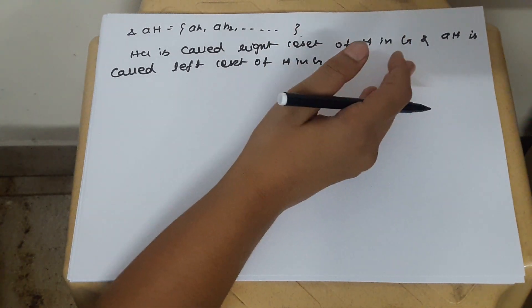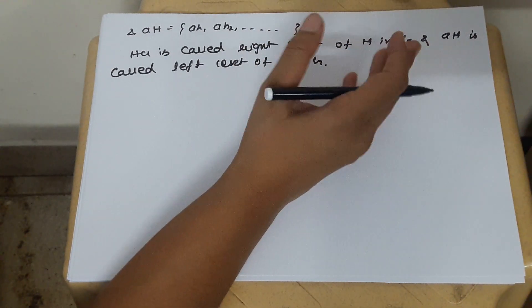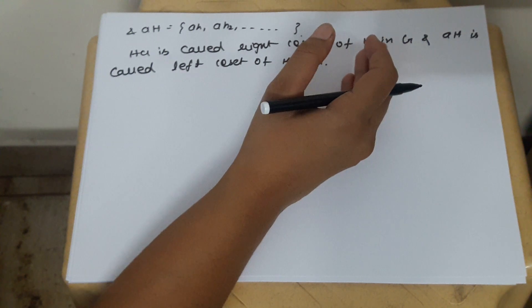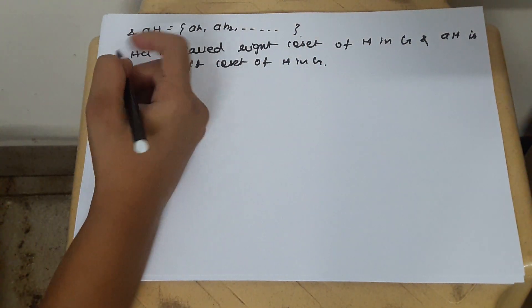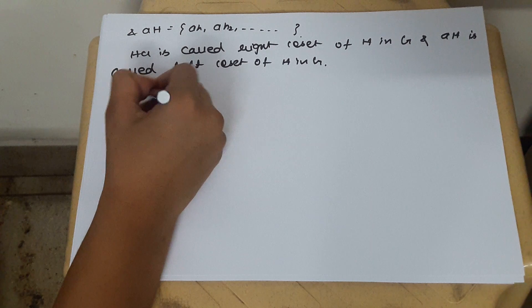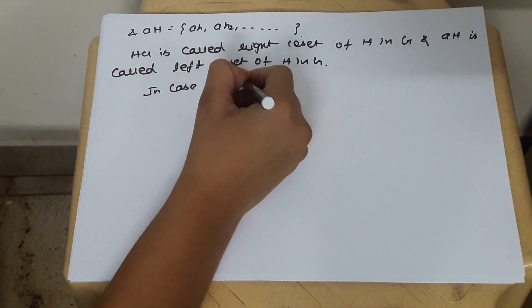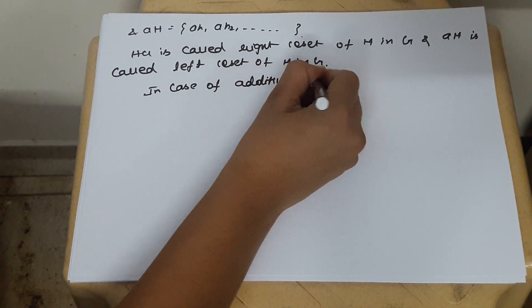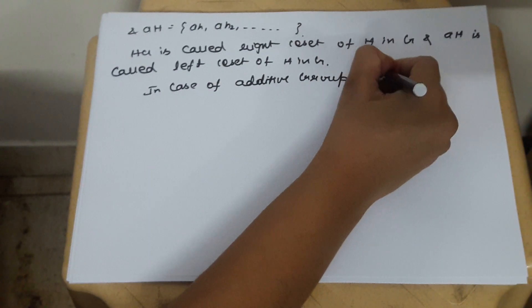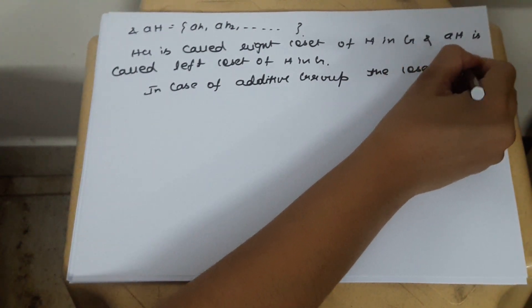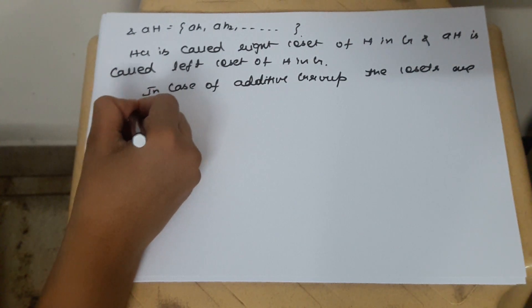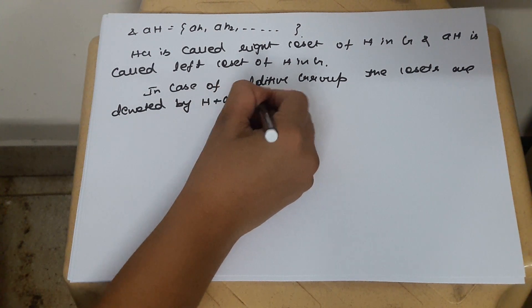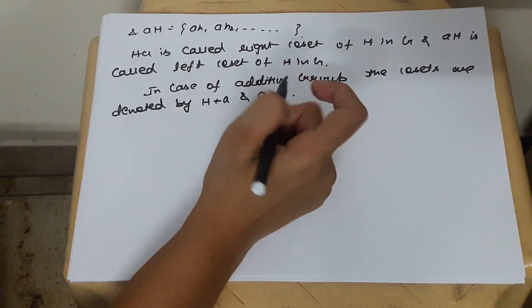This was the case of multiplicative group because whenever we are doing any kind of proof in group theory without loss of generality we are taking this group as a multiplicative group only. But, in case of additive group, the cosets are denoted by H plus A and A plus H.